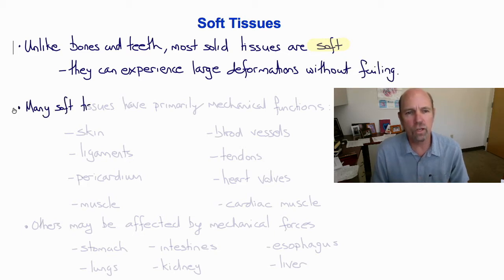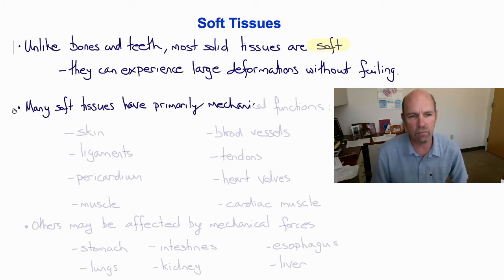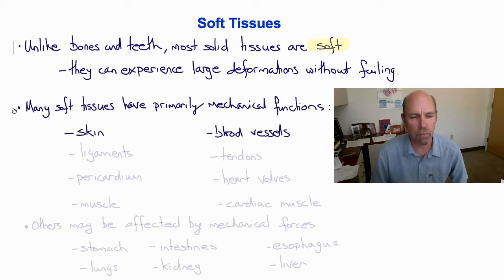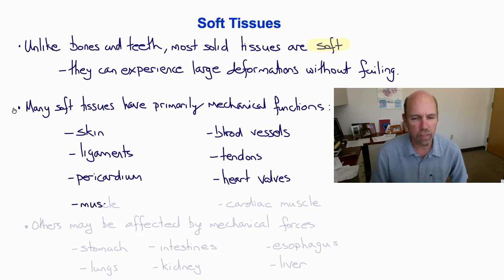Many soft tissues have primarily or dominantly mechanical functions. Examples include skin and blood vessels, ligaments and tendons, pericardium and heart valves, skeletal muscle and cardiac muscle.